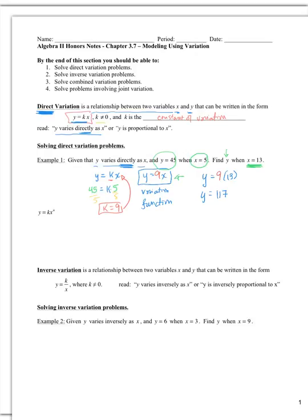For direct variation, if x is increasing, then y will be increasing. As you substitute in larger and larger values for x, y becomes larger and larger as well. Similarly, if you substitute in smaller and smaller values for x, y also decreases. This is the pattern you will recognize in the relationship between x and y for direct variation.